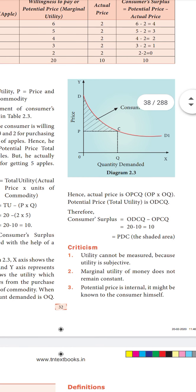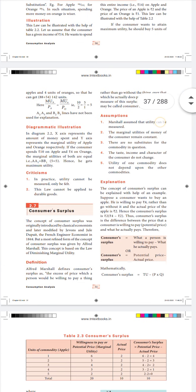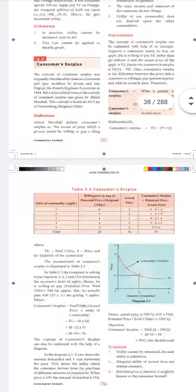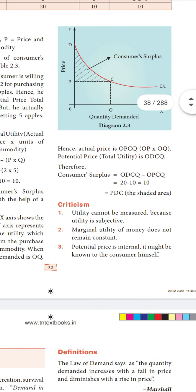Now coming to criticism. First criticism: utility cannot be measured, because utility is subjective. Although the first assumption says utility can be measured in terms of money, in reality feelings and taste cannot be measured with any scale. Second criticism: the marginal utility of money does not remain constant — though the assumption states it is constant, in practice it changes.